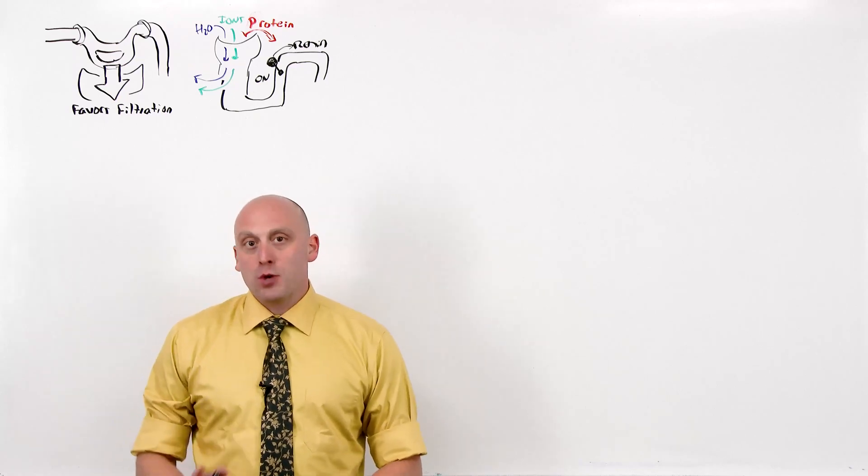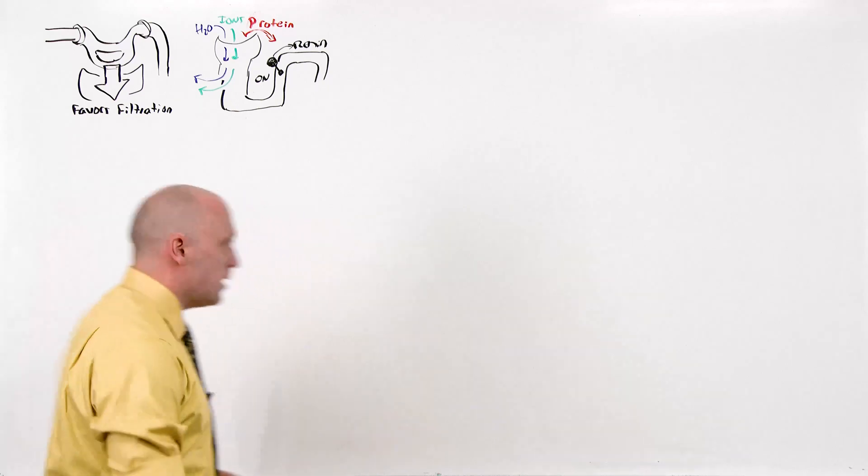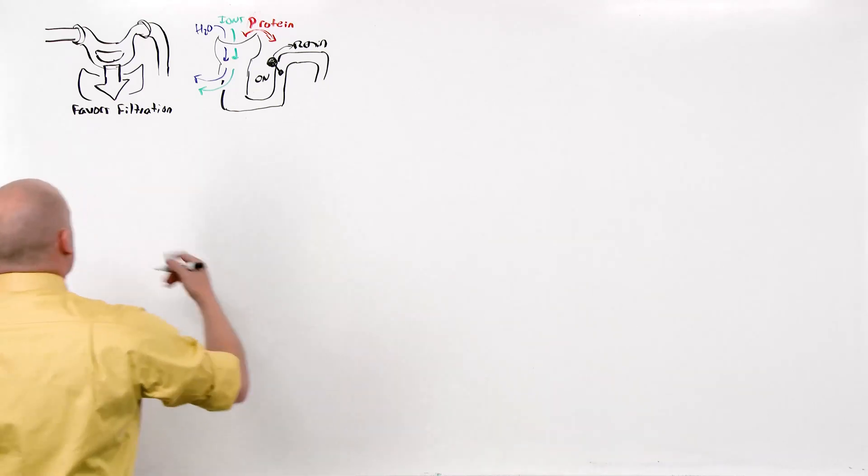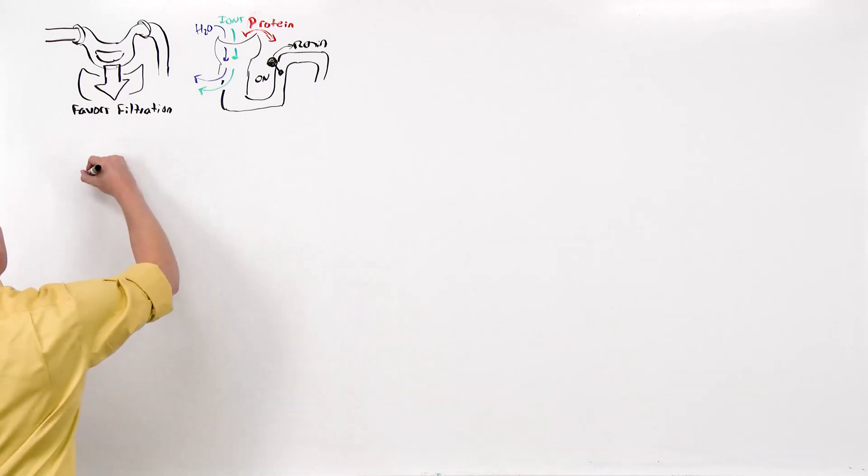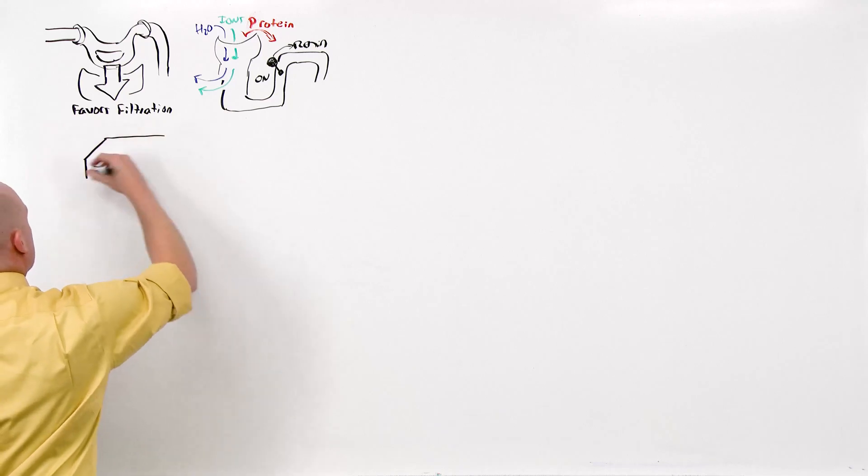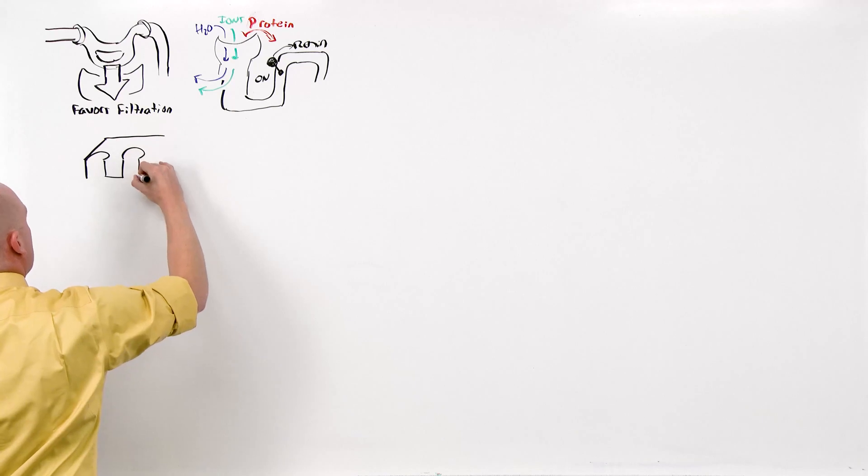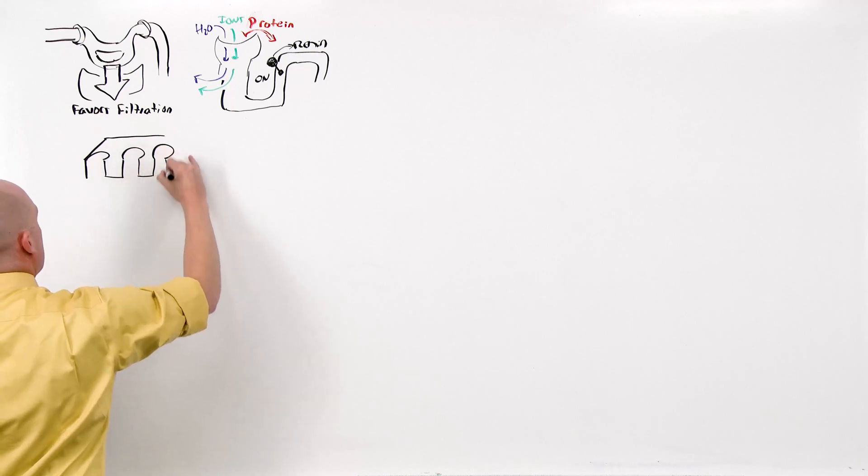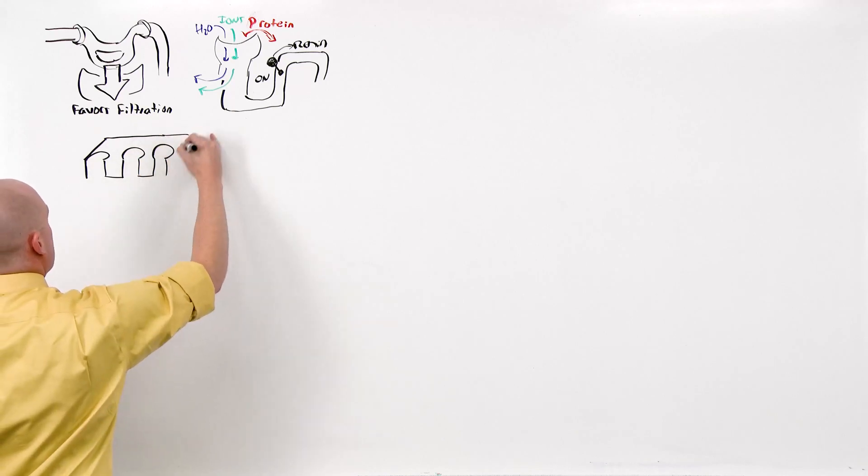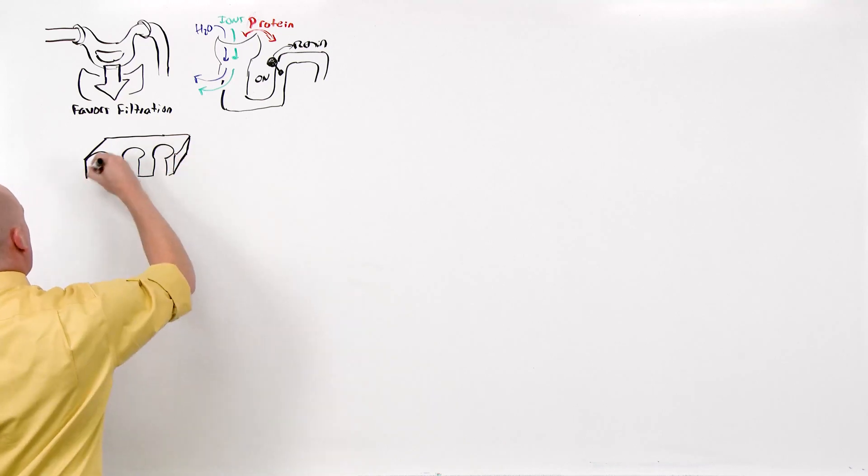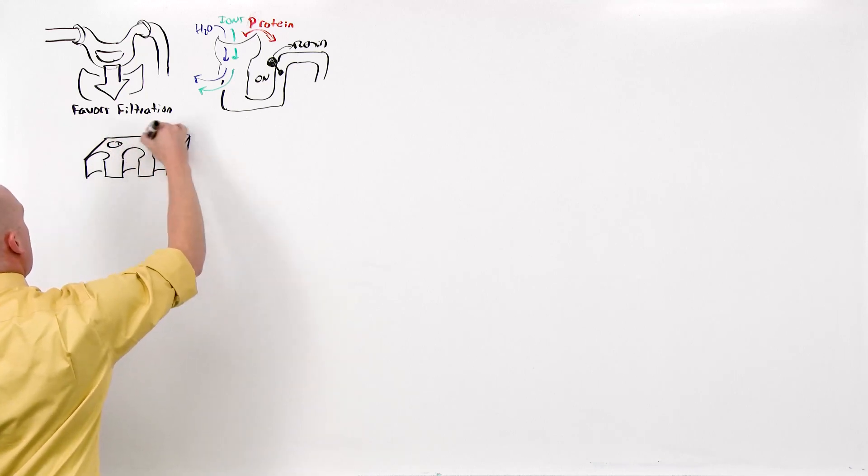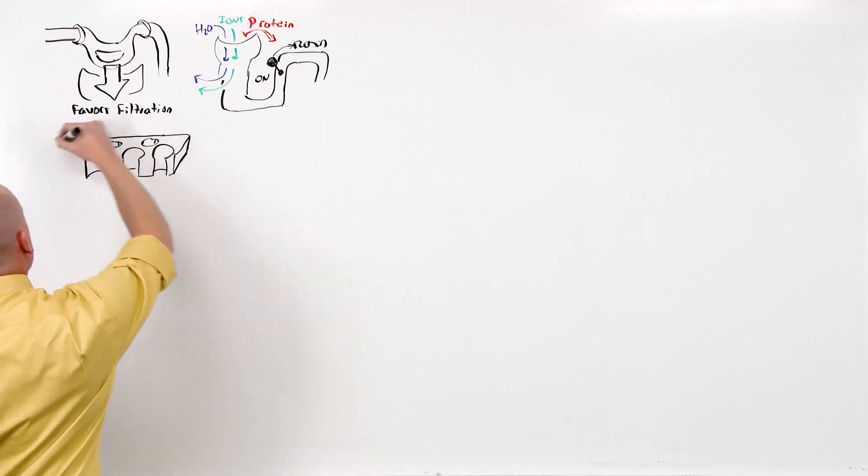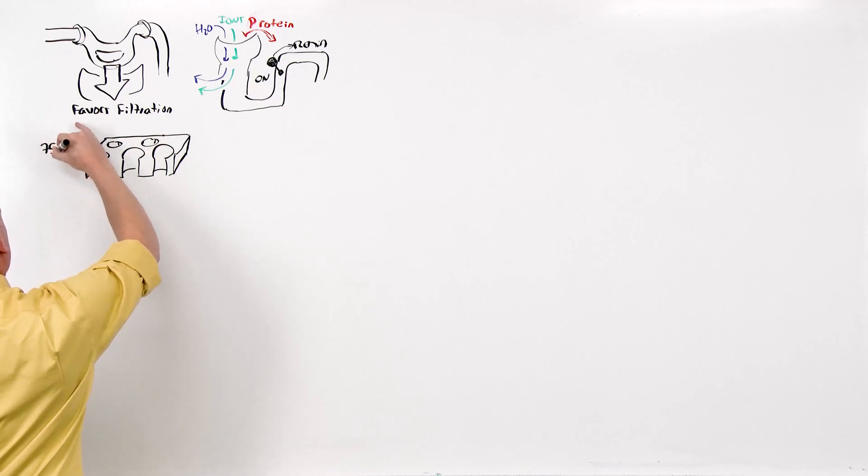It is not supposed to restrict anything. This arrangement exists between an endothelial cell. An endothelial cell has large fenestrations in it. Most endothelial cells do not have large fenestrations in them. Those endothelial cells restrict everything.